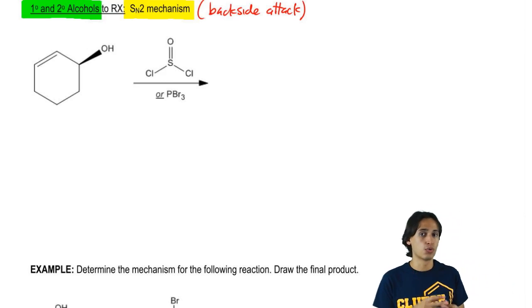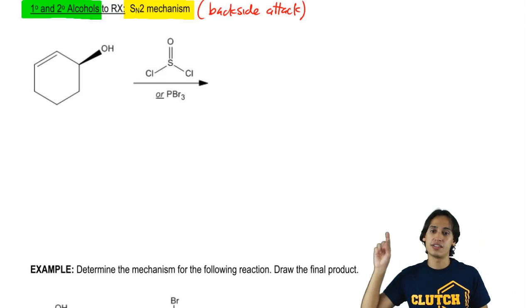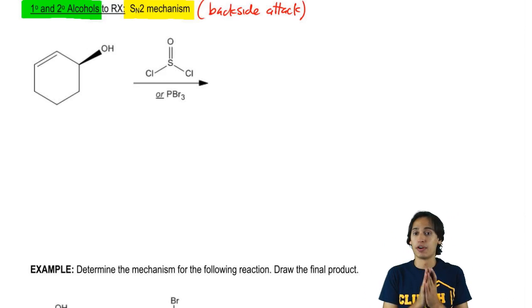The structure of SOCl2, or thionyl chloride, is an S double bonded to O, with two chlorines coming off the ends.